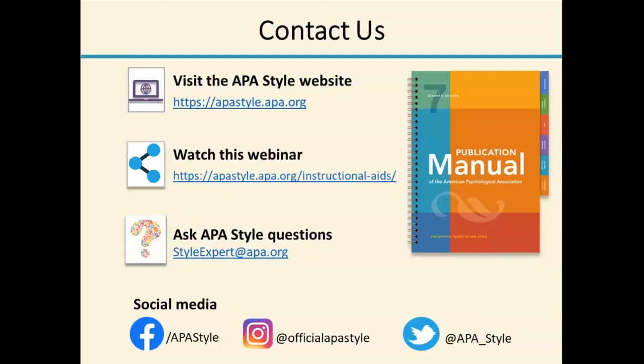Another question is about ordering entries in a reference list when you have multiple works that share some of the same authors. For example, if you have two works where the first two authors are the same and the second work has an additional third author, how would you order them? You go letter by letter alphabetically — so the work with two authors would precede the work with three authors. The principle there is that nothing precedes something. You basically keep going through the names until you get to the one that differs.